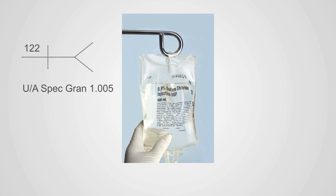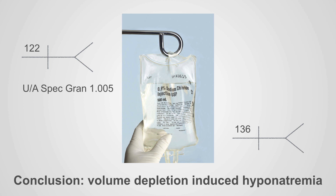Here's a very typical scenario: a patient comes into the ER with a sodium of 122. The reflex is often to start normal saline, and after a liter or so, their sodium normalizes to 136. The typical doctor says the patient had volume depletion-induced hyponatremia, fixed with normal saline — but this is not the case. Looking at the specific gravity, this patient does not appear volume depleted; they are making as dilute urine as physically possible.